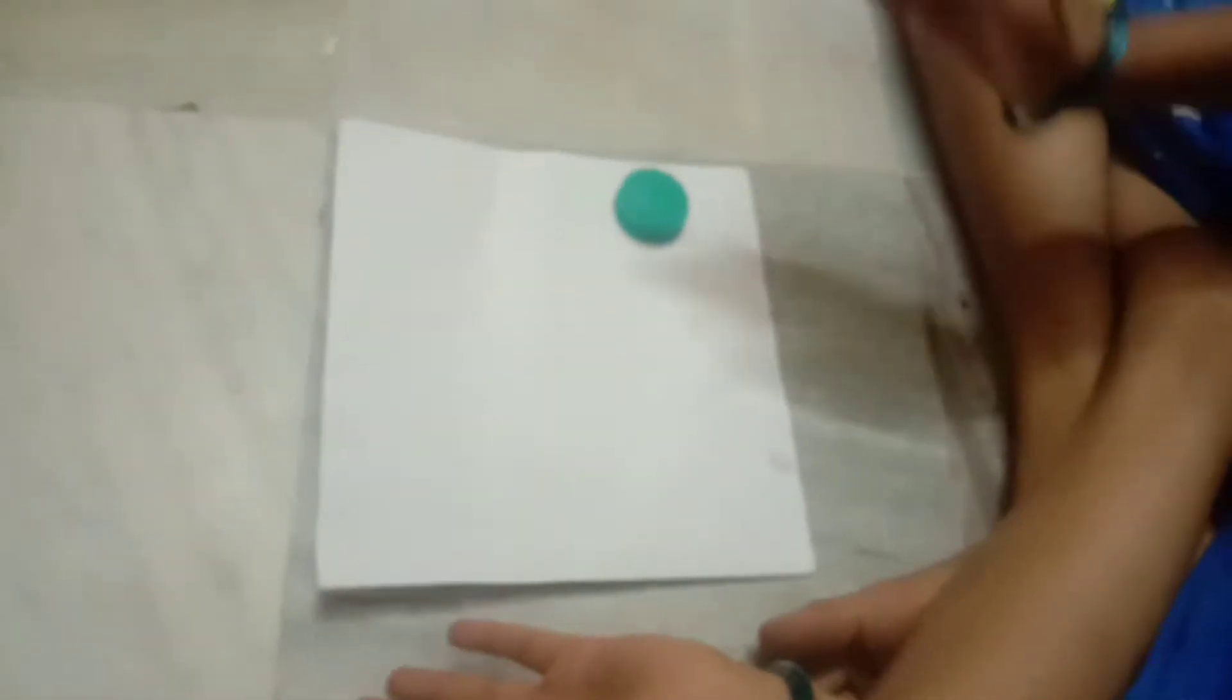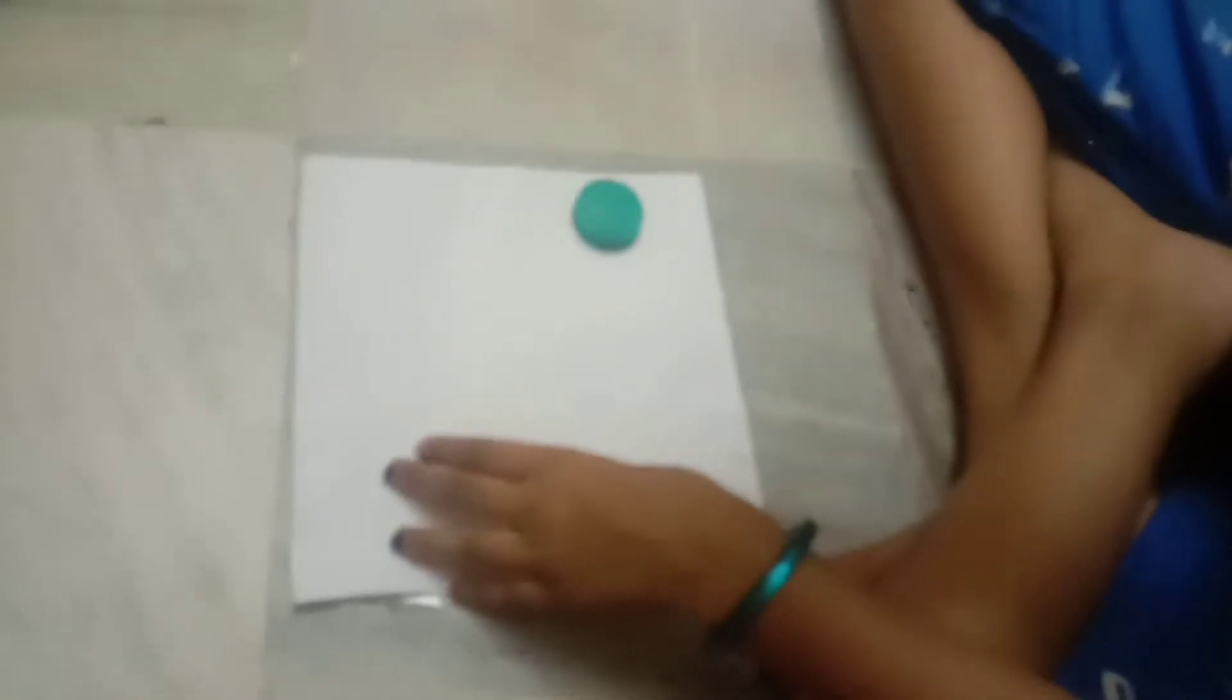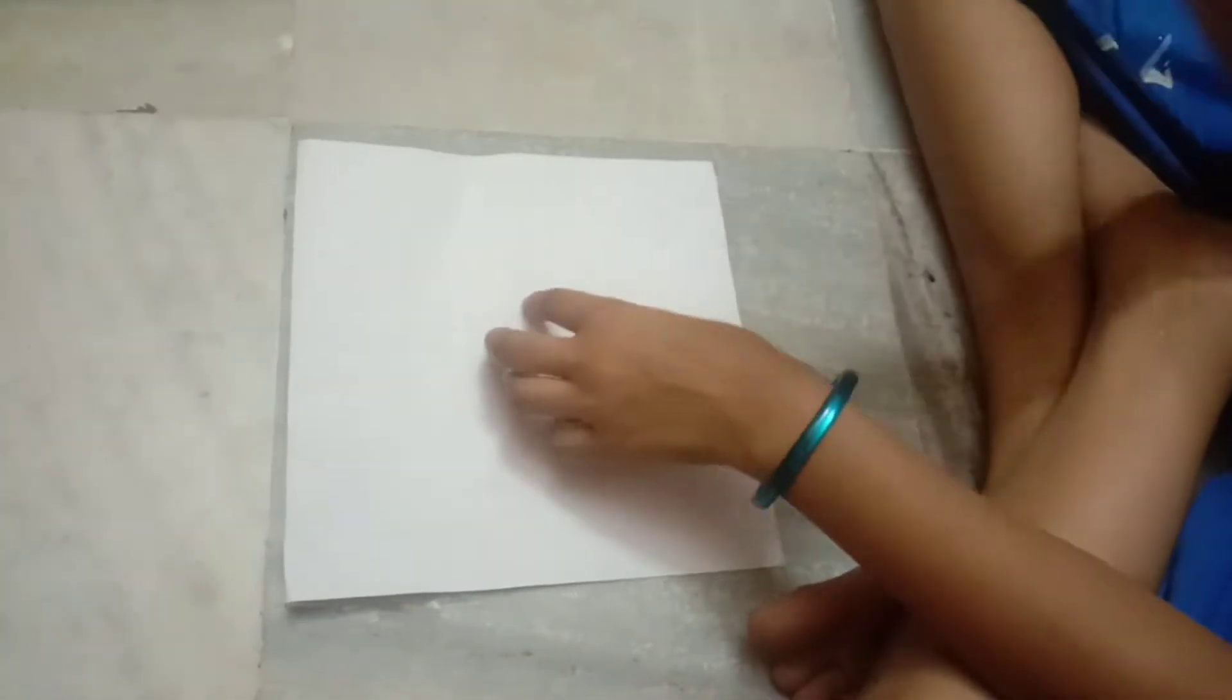Hello friends! In this video, we will see how emoji stickers are made. Here is an A4 sheet. There is a bottle and colors.